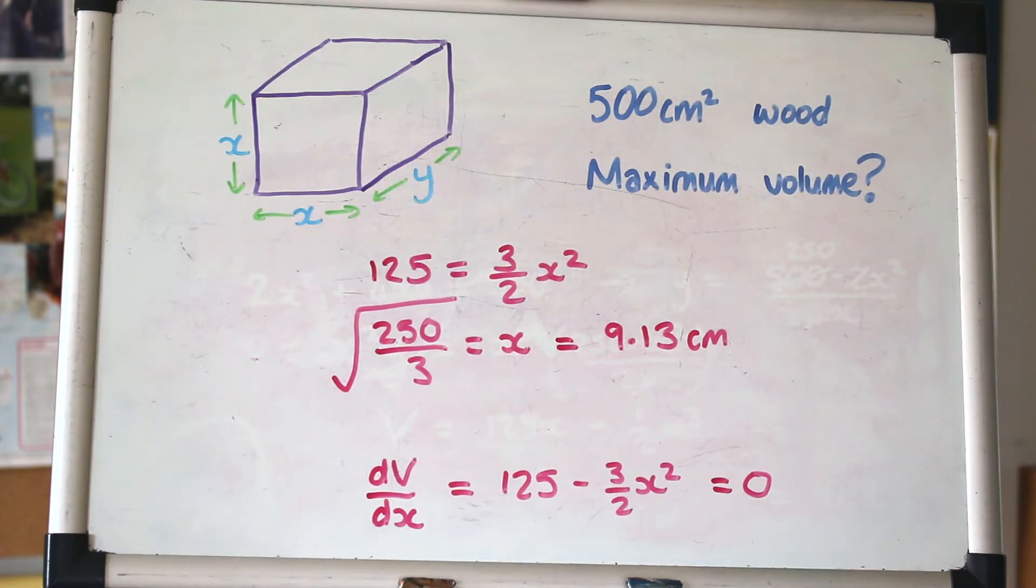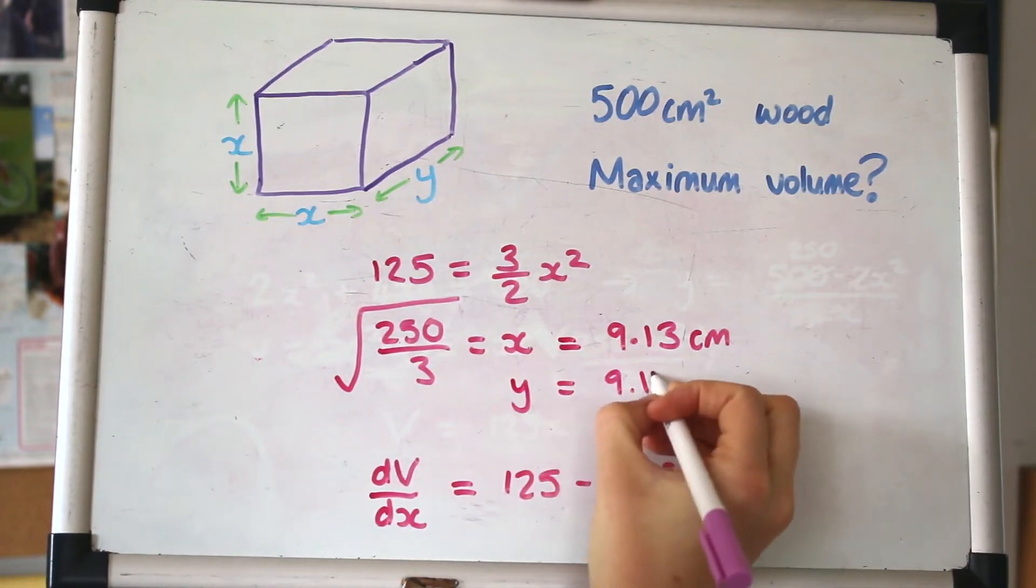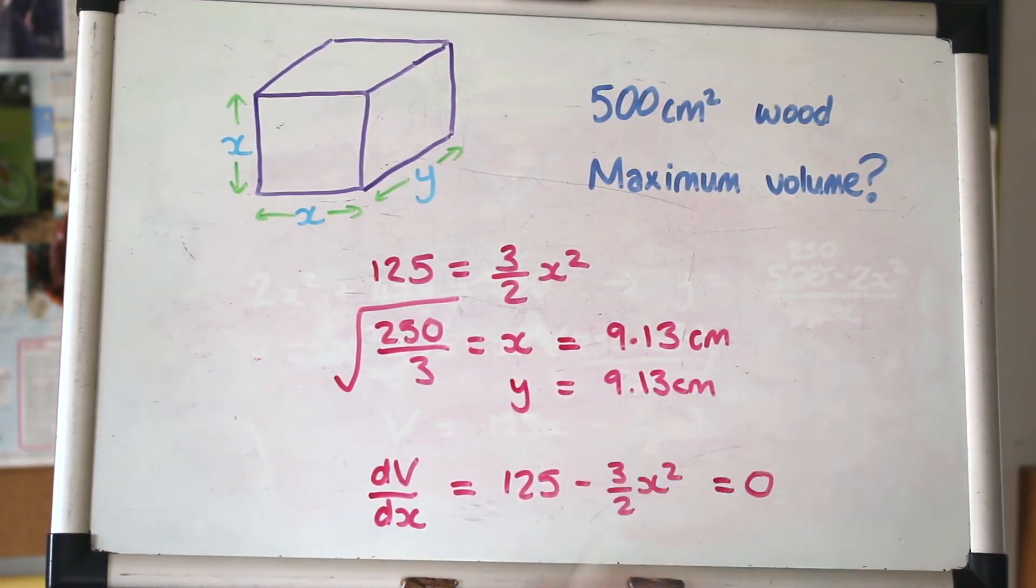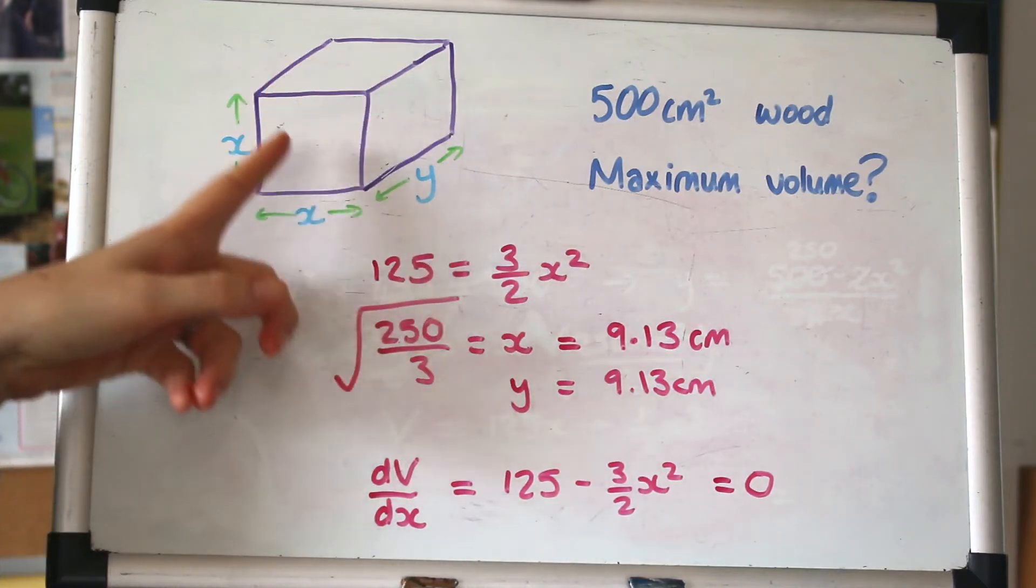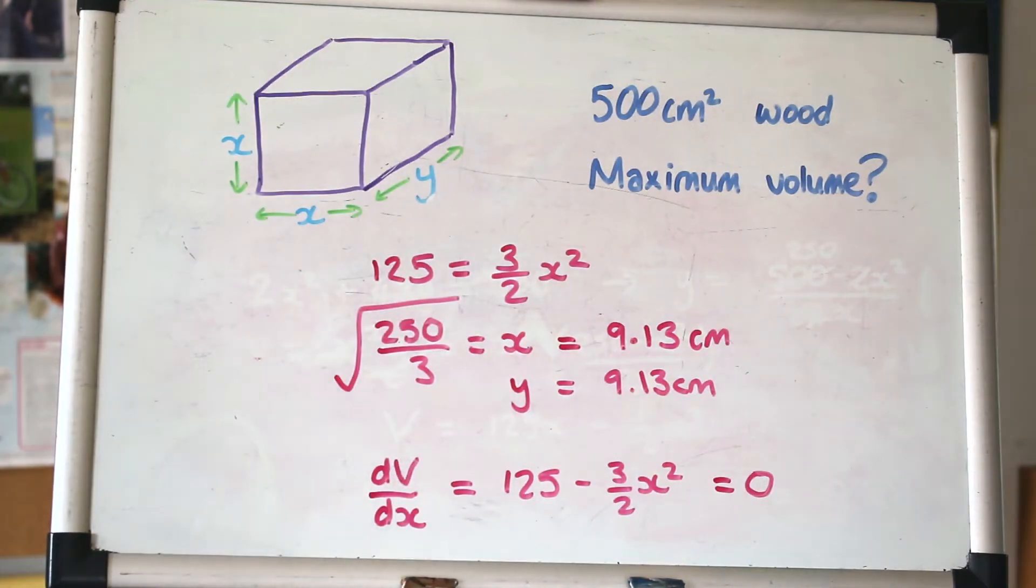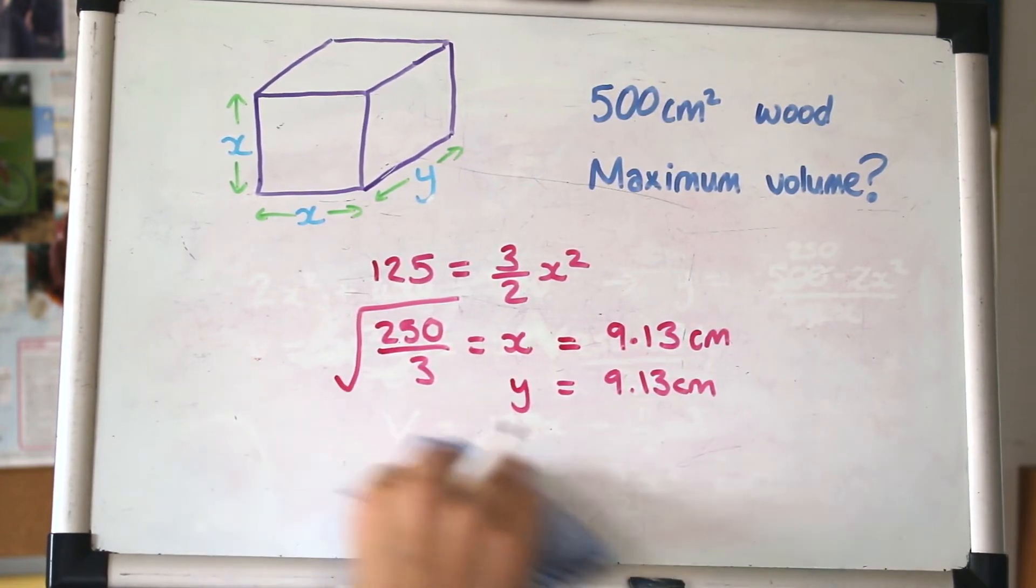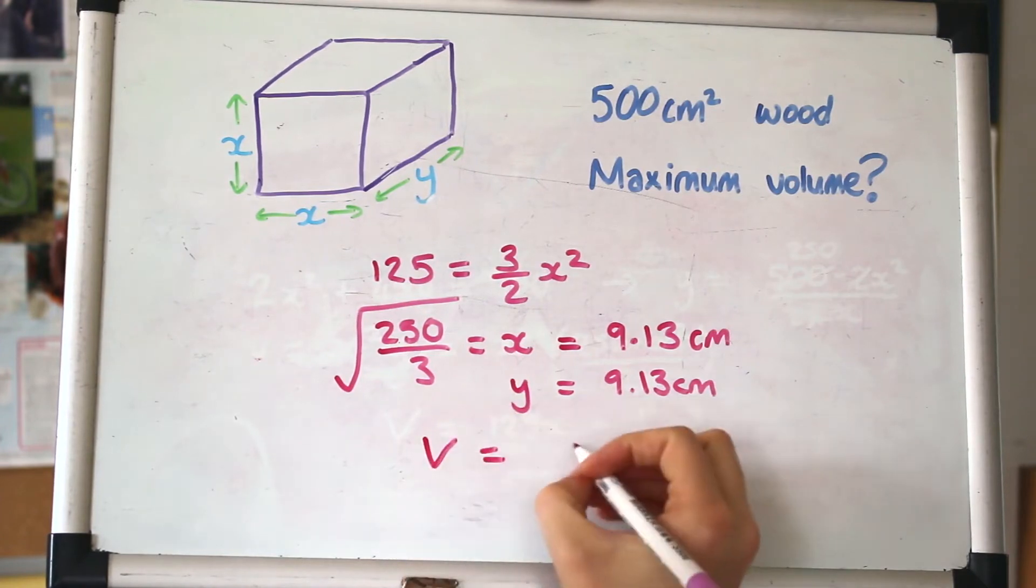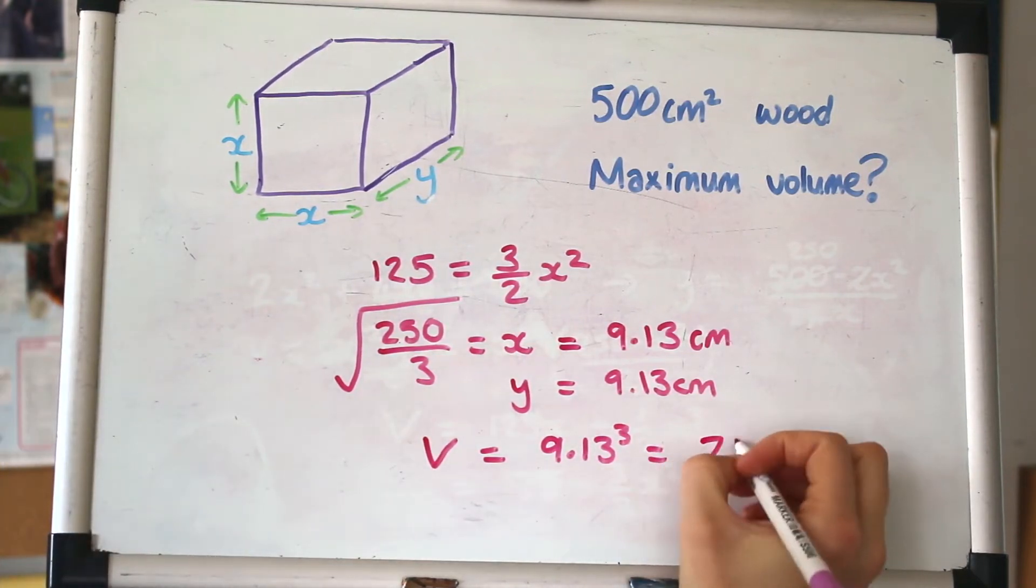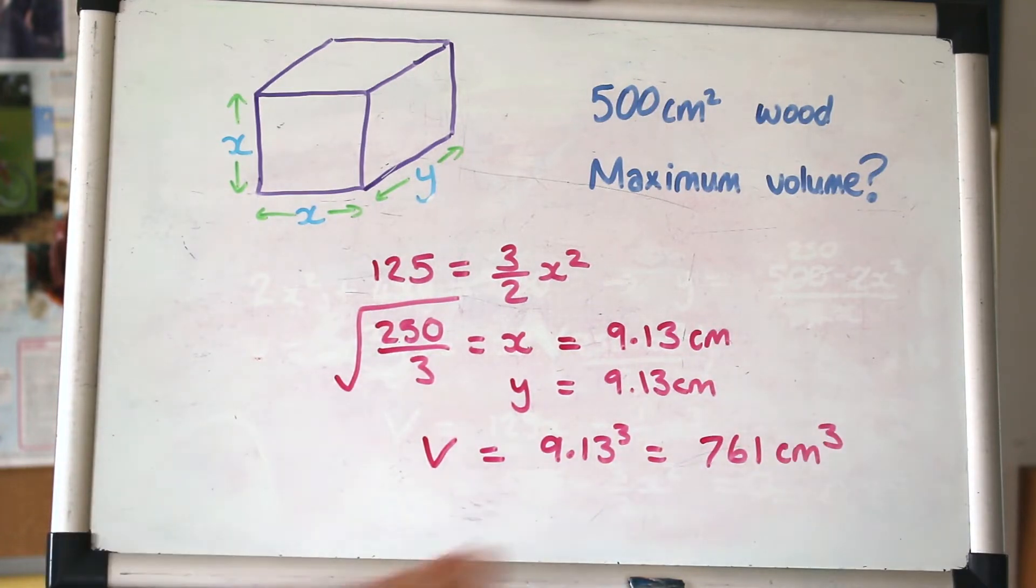If you substitute that in to find y as well, you can get the dimensions of the box. It turns out that y is also 9.13. That might be intuitive or obvious, that you get the maximum volume when y is the same as x, when they're all equal. That's the way you can prove it. The volume would be 9.13 cubed, which gives 761 cm³.